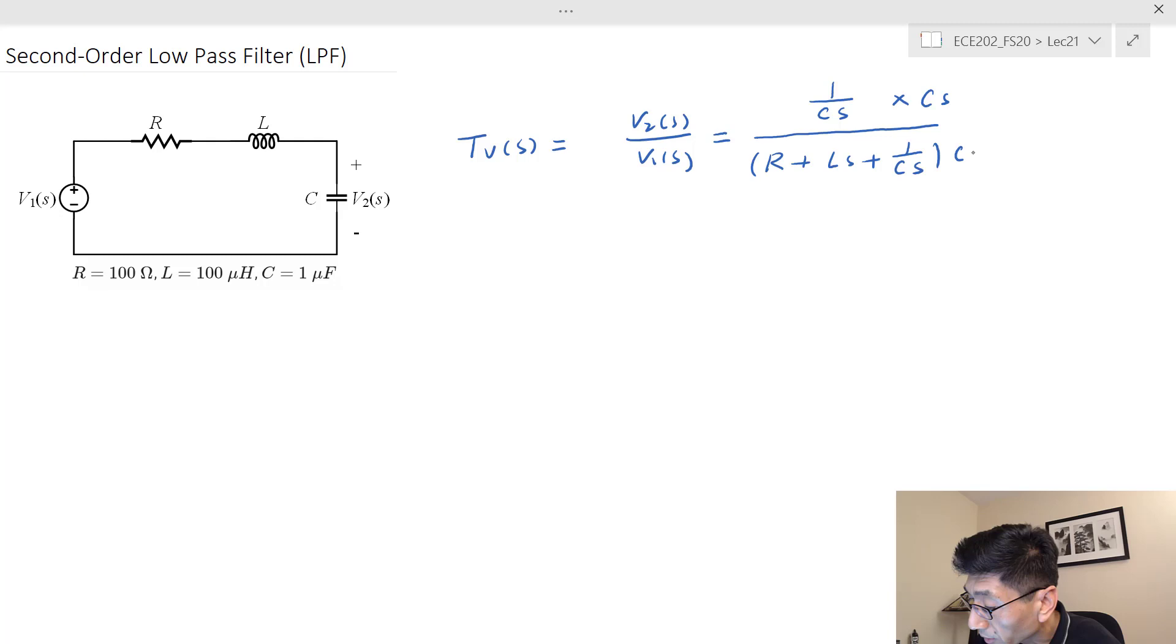If we multiply Cs on the numerator and denominator, we're going to get the form we like. On the numerator becomes one. On the denominator we have LCs² - I'm trying to write the second order squared term first.